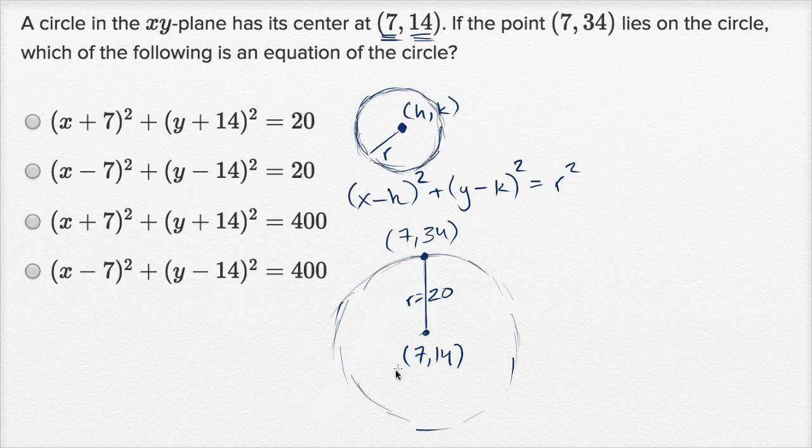So now we know. We know h is equal to seven. K is equal to 14. And r is equal to 20. So it's gonna be x minus h, x minus 7 squared, plus y minus k, y minus 14 squared.